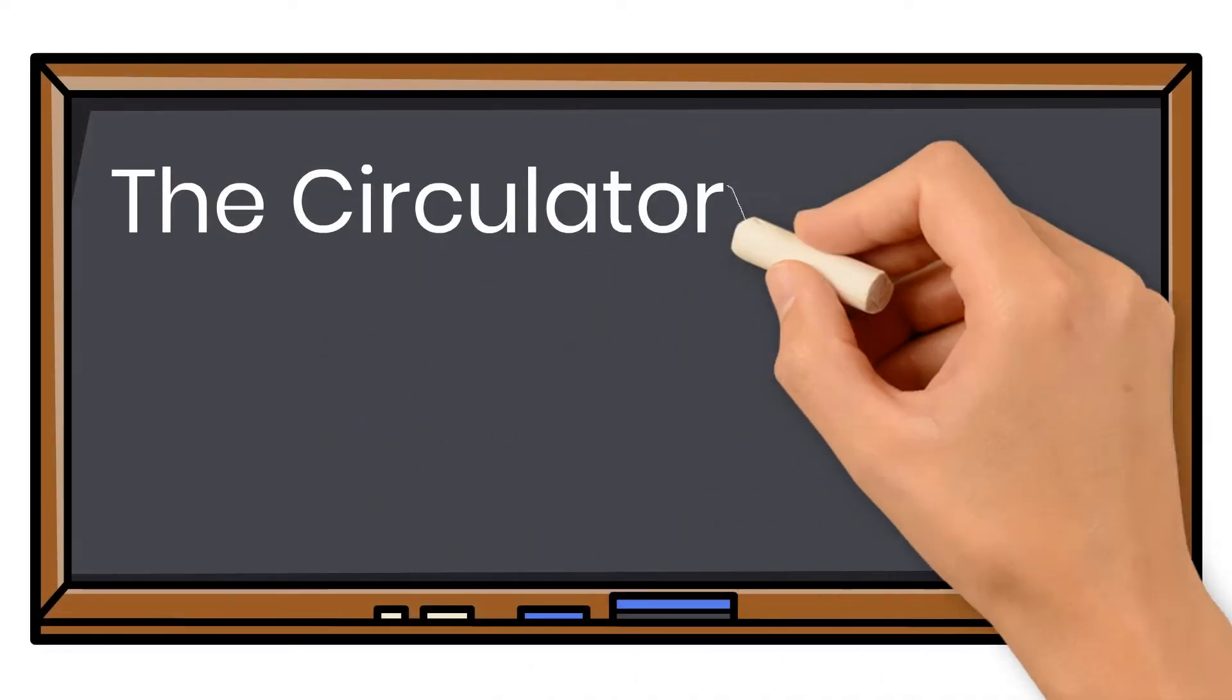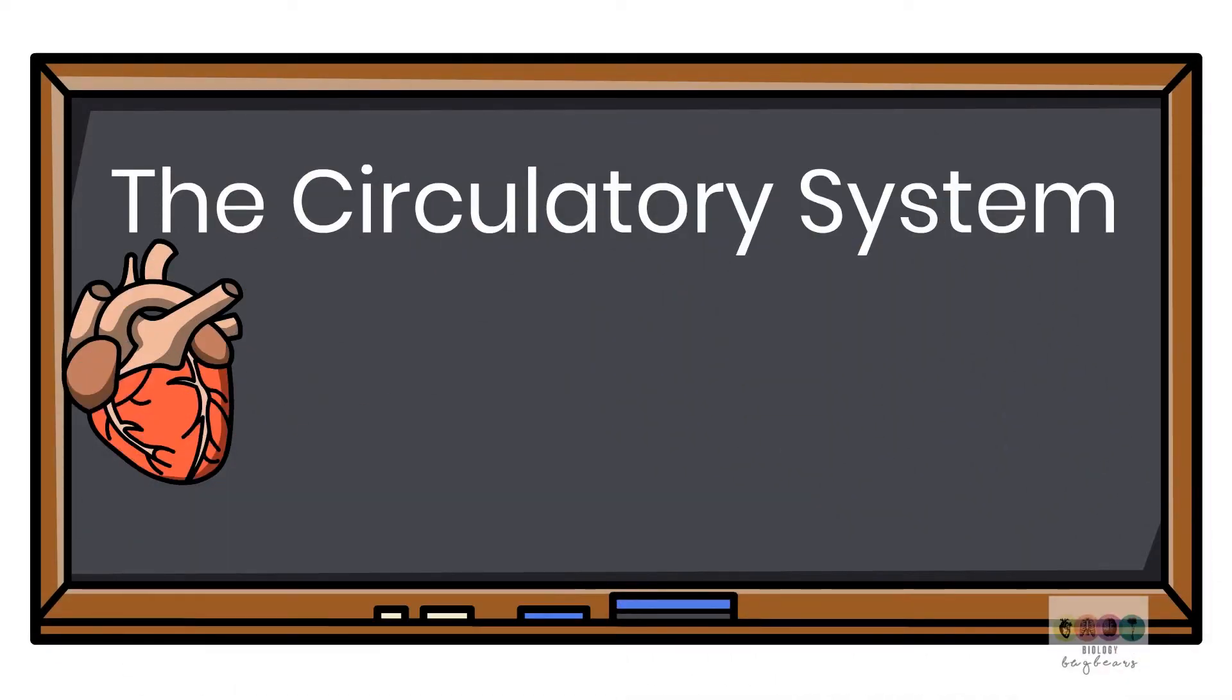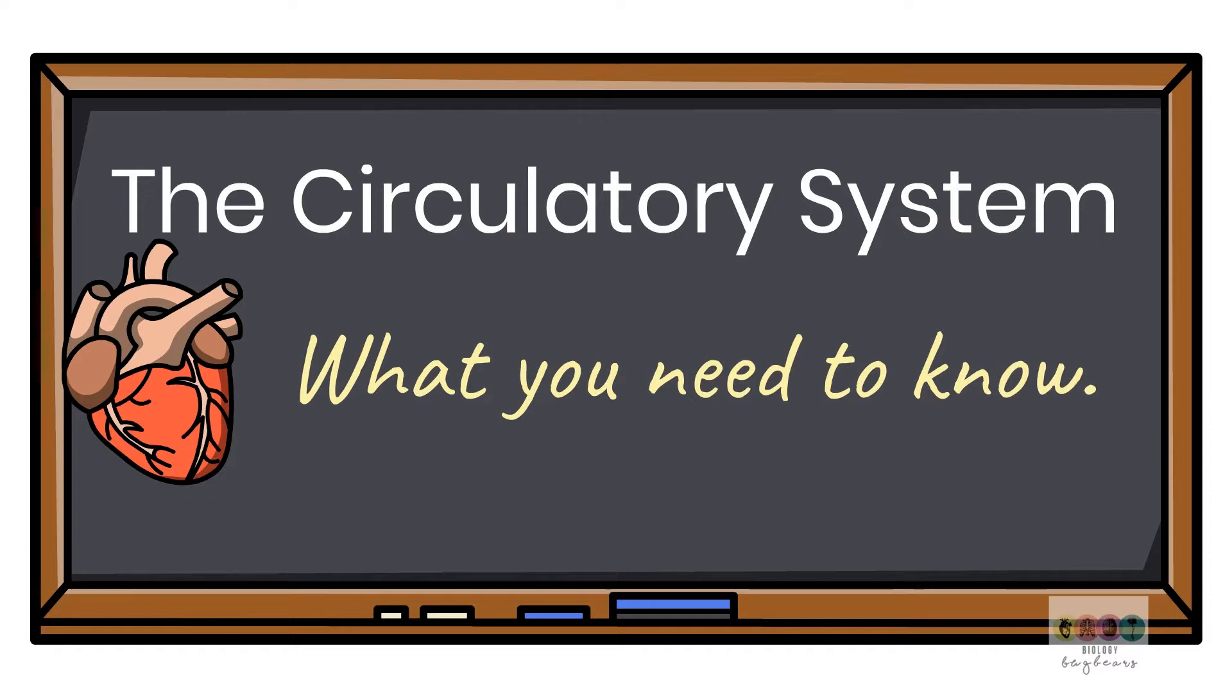The circulatory system in Leaving Cert Biology is quite a long topic, so what do you need to know? How do you organize your revision?